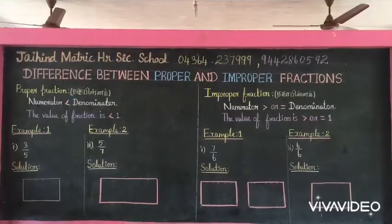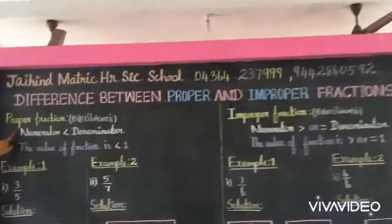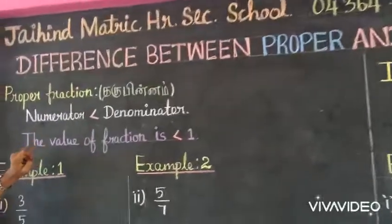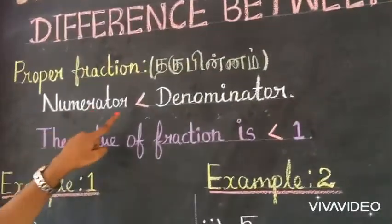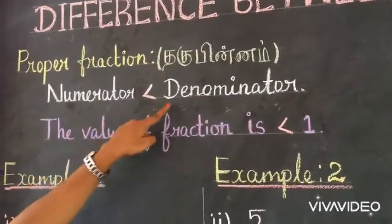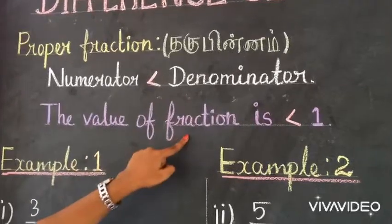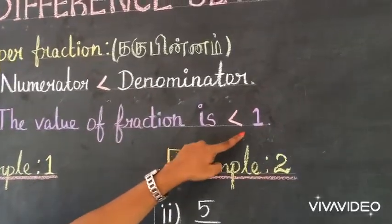First one: proper fraction. What is a proper fraction? If the numerator is less than the denominator, the value of the fraction is less than 1.